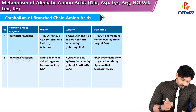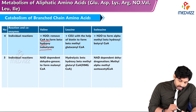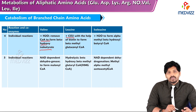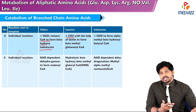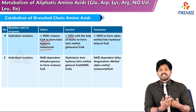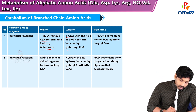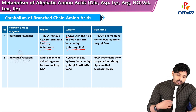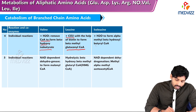From the fourth step, individual reactions occur. For valine, water is added and CoA is removed to form beta-hydroxy isobutyrate. For leucine, carbon dioxide is added with the help of biotin — because all carboxylation reactions in the body require vitamin B7, that is biotin — to form beta-methylglutaconyl CoA. For isoleucine, water is added to form alpha-methyl beta-hydroxy butyryl CoA.